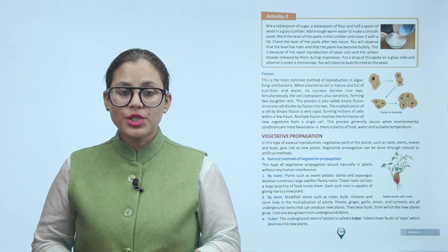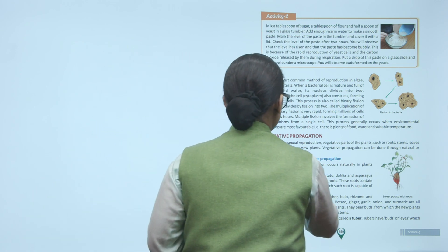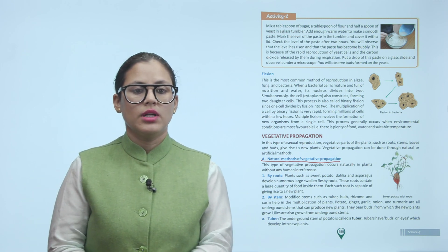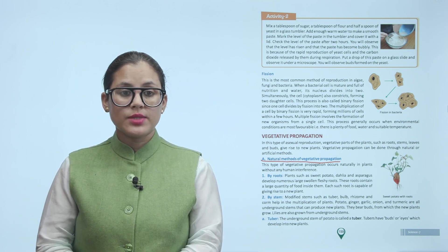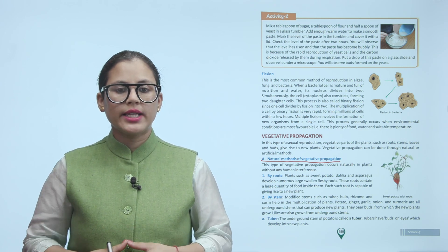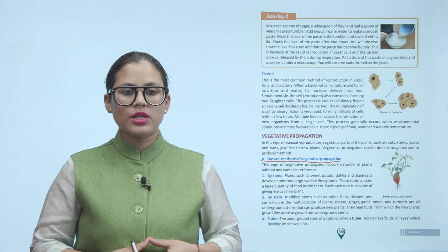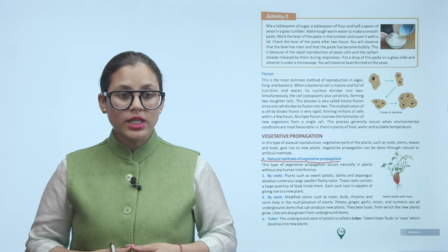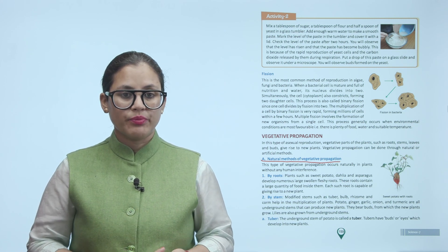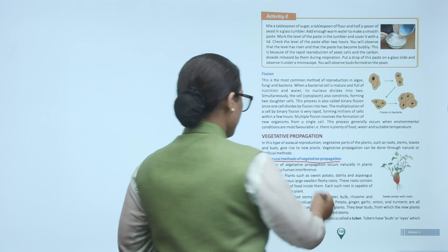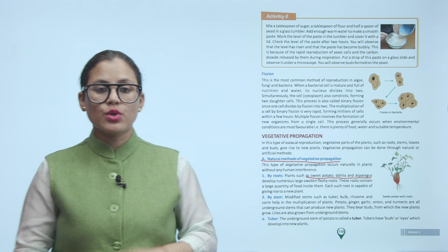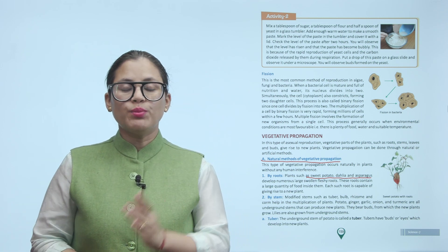Natural method of vegetative propagation: This type occurs naturally in plants without any human interference. By roots — plants such as sweet potato, dahlia, and asparagus develop numerous large swollen fleshy roots. These roots contain a large quantity of food inside them, and each such root is capable of giving rise to a new plant.